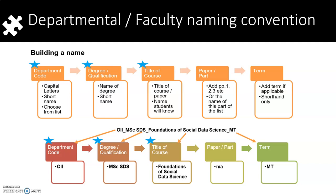The department and faculty naming convention is as follows. There is a departmental code, a degree or qualification, and the title of a course, and all these elements are separated by underscores. Any further information can be added at the end of the list. In practice this will look something like the example on screen: OII_MSCSDS_Foundations of Social Data Science_MT.